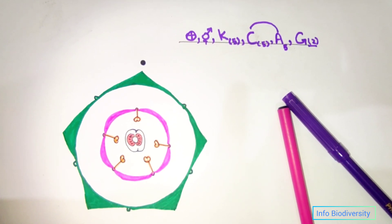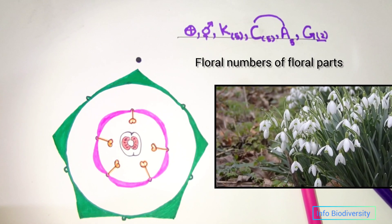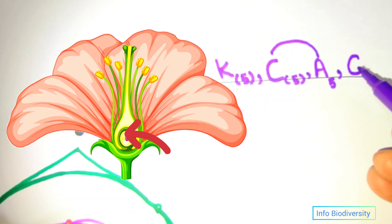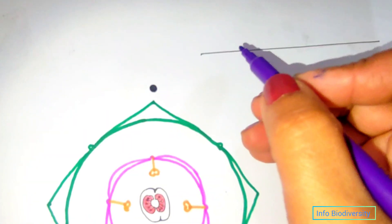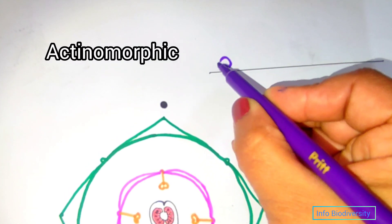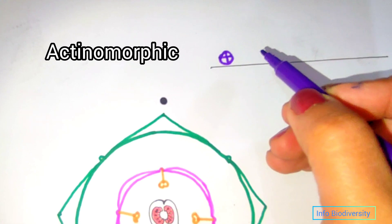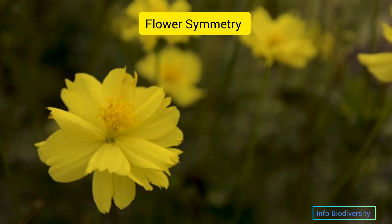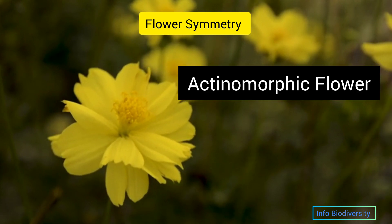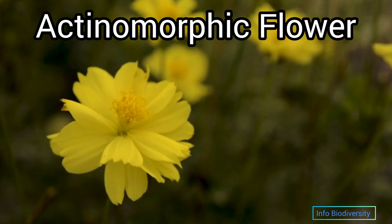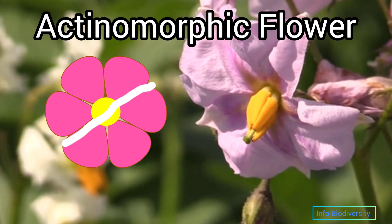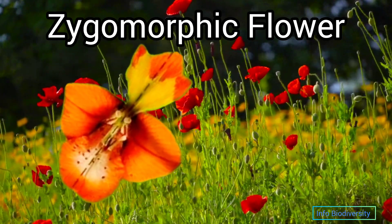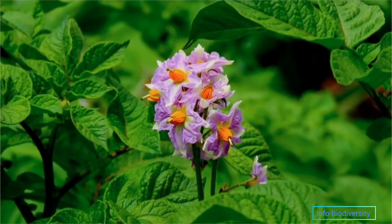The floral formula represents the floral numbers of different parts — the symmetry of the flower, the calyx, corolla, androecium, and gynoecium. Here you see I have drawn the circle with a plus; this is called actinomorphic. In family Solanaceae, most flowers are actinomorphic and the symmetry is radial. Flower symmetry is classified into two types: actinomorphic flowers, which can be divided from any point into two equal parts, and zygomorphic flowers, which cannot be divided into equal parts from any point.